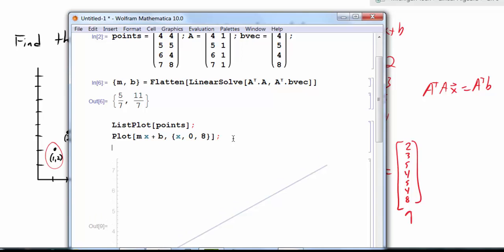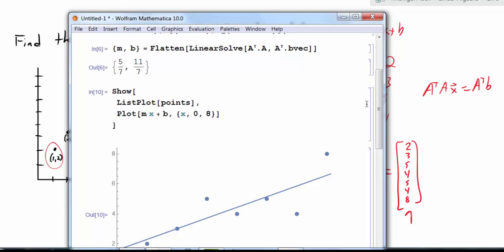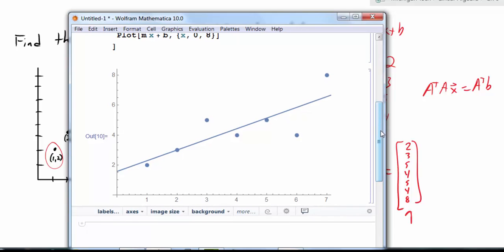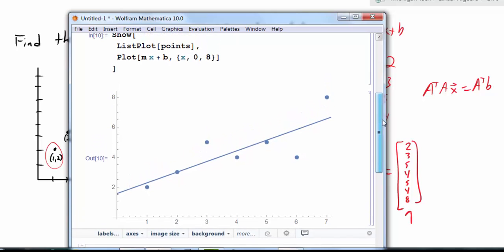But really to see if this is the best fit line, I want to show these two plots together. So I will show the two plots together. And sure enough, I can see that that looks like the best fit line. It really is passing right through the middle of those points, hopefully minimizing my error. So I found the best fit line.